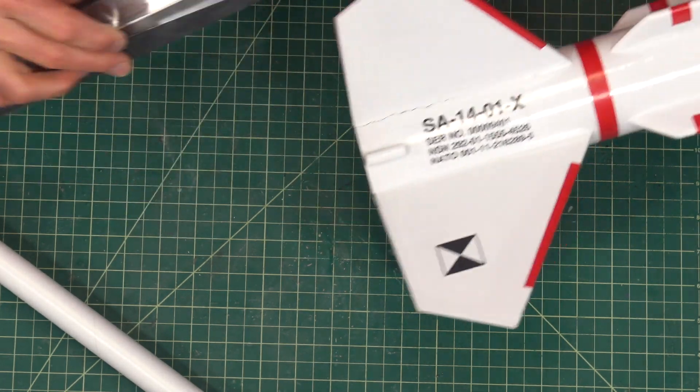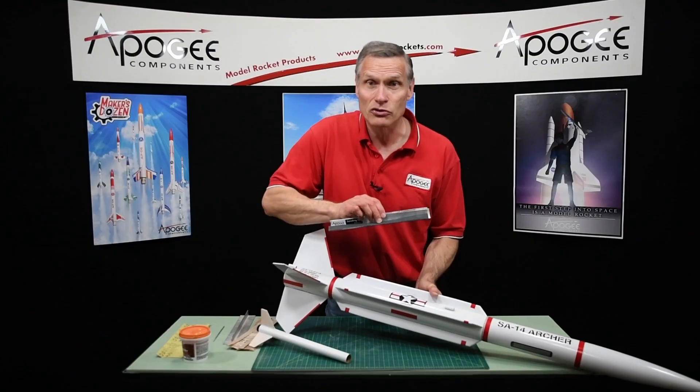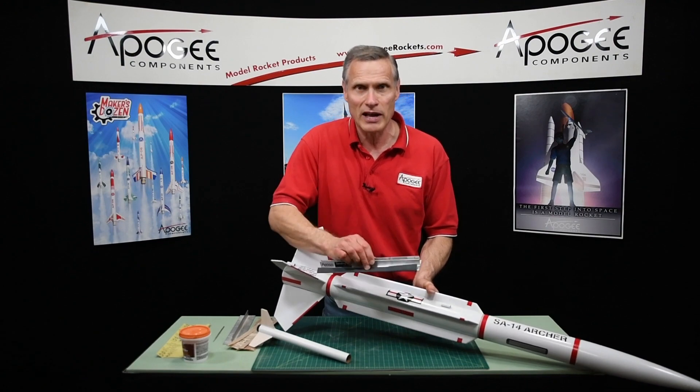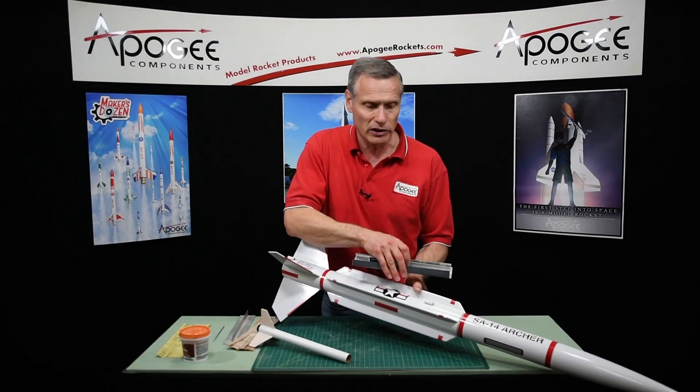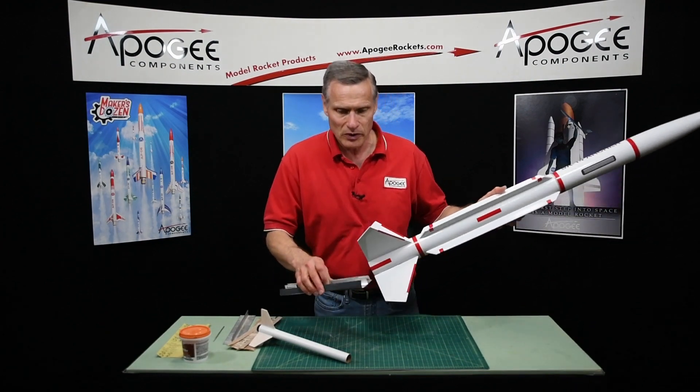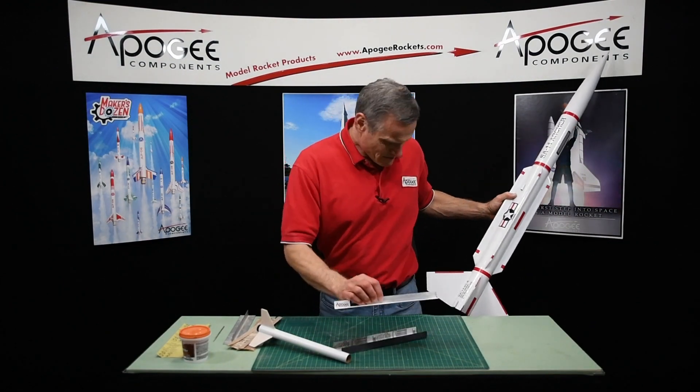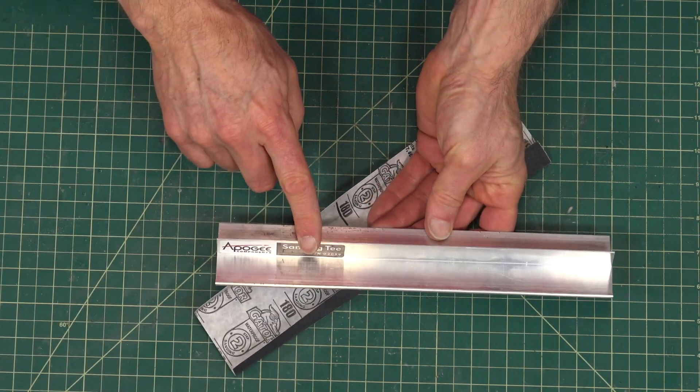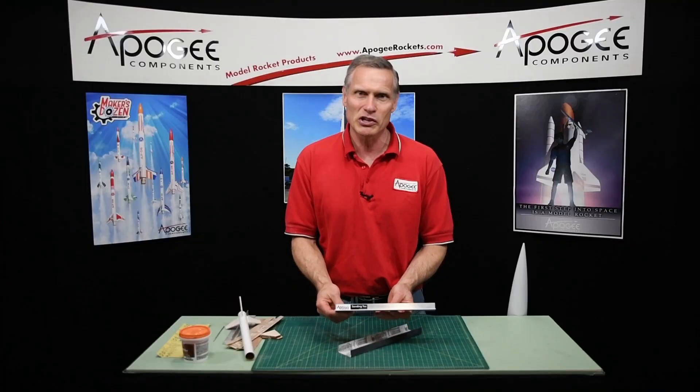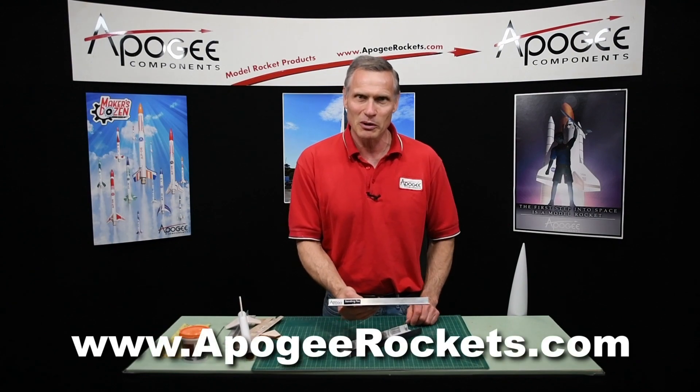I can take this and just lay it nice and flat so I got a uniform fillet, and that's the key. So it really helps when you've got these long streak-like fins on your rocket. So this is the Apogee sanding tee, and you can get it here at Apogee Components. Our web address is www.ApogeeRockets.com.